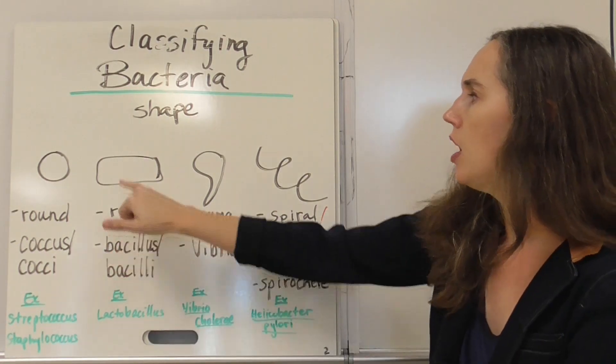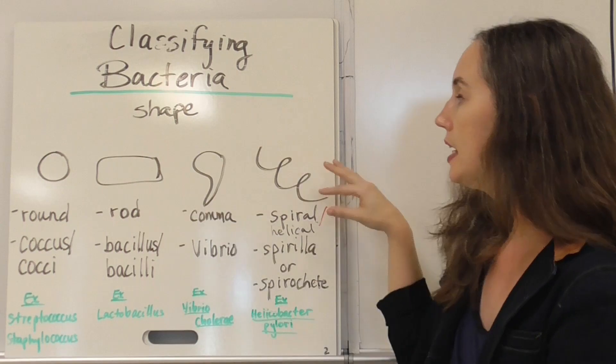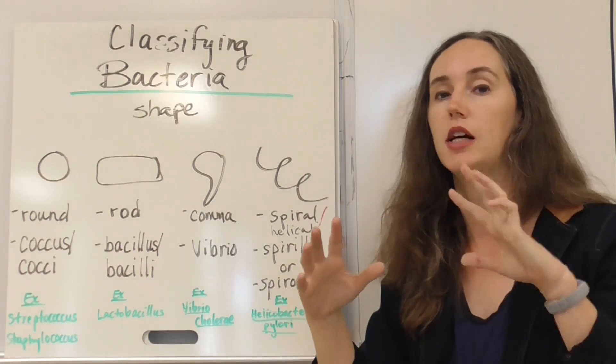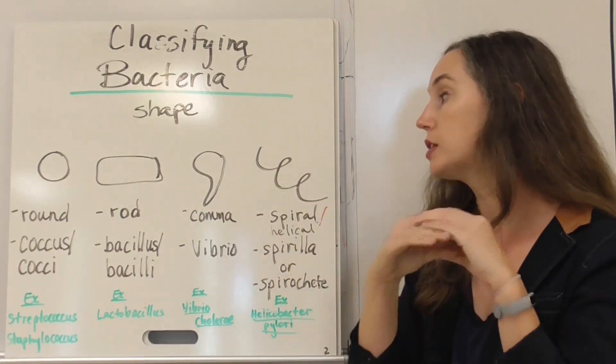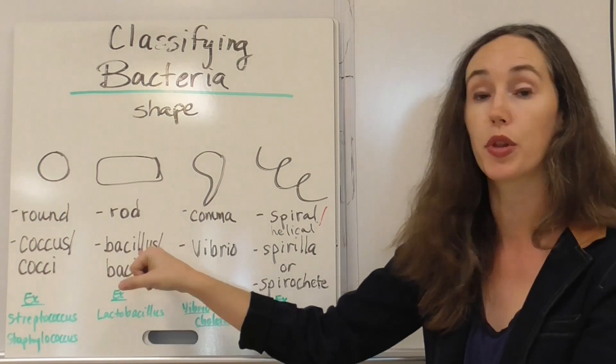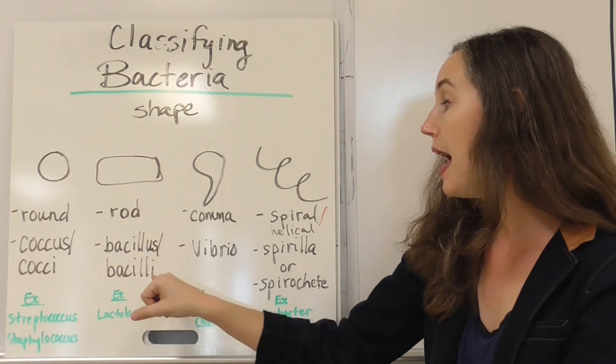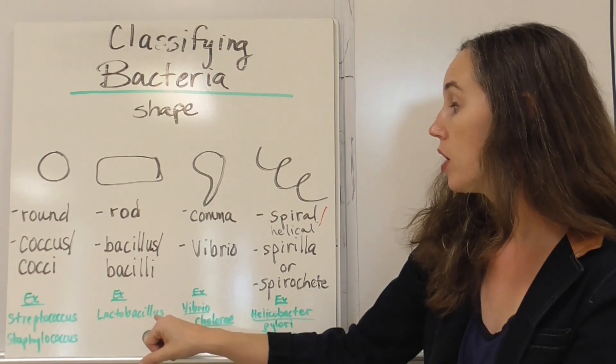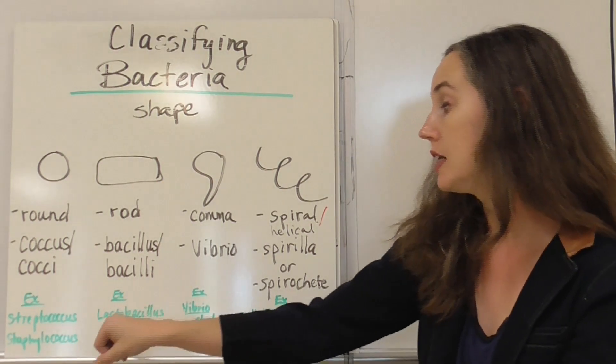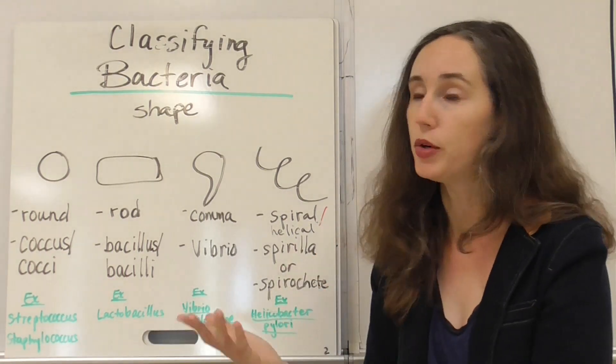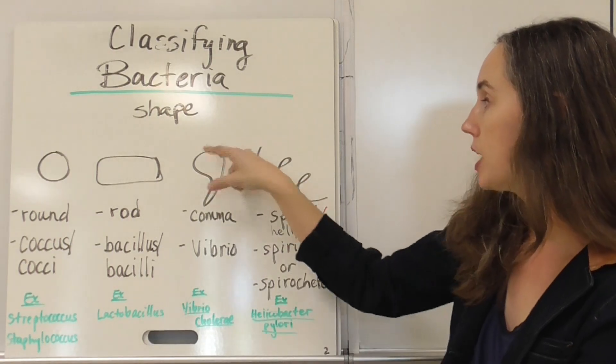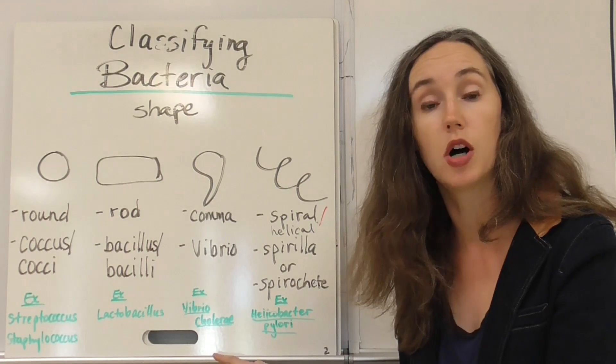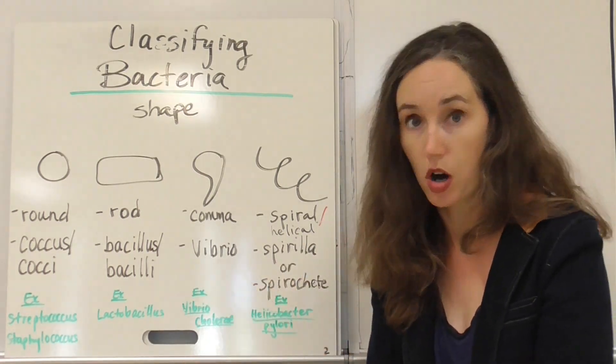Others, the rod shaped ones, and often these rods or any of these can have like additional flagella or some other apparatus coming off the sides. But the fundamental shape is a rod. These are called bacillus or the plural is bacilli. And an example in real life is lactobacillus. Lactobacillus are rod shaped bacteria that break down lactose, which is the sugar in milk. Comma shaped ones are called vibrio. And a very common example is vibrio cholery, which is what causes the disease cholera.